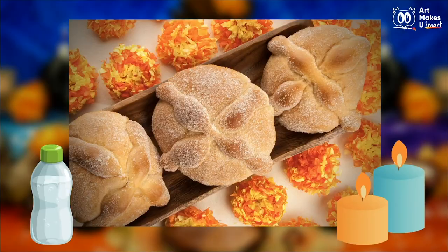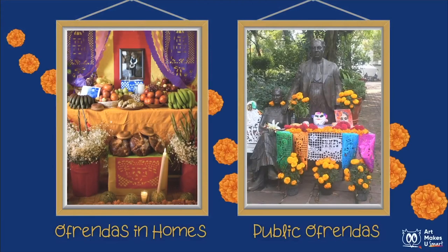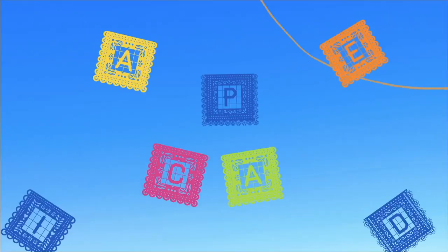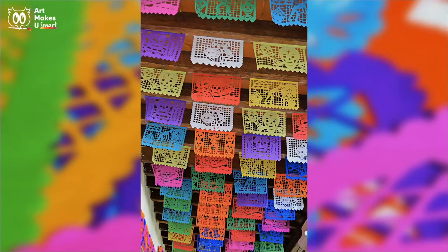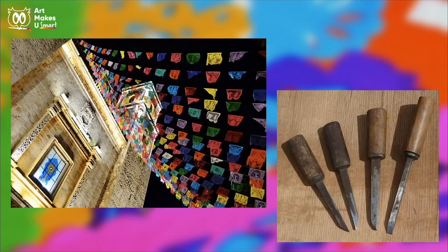Pan de muerto is a sweet bread decorated with dough shaped like bones. It, along with other favorite foods, are on the ofrenda. Ofrendas don't just happen at home — they can be in public spaces too, like this statue of Frida Kahlo and Diego Rivera, two very famous Mexican artists. Papel picado, which can be found in ofrendas, are beautiful papers with designs cut out of them. Papel picado translates to punched paper. The lacy designs allow airflow for the spirit to be able to pass through. To make them, artists use stacks of bright tissue paper and chisels to punch out the intricate designs.